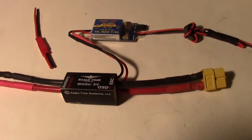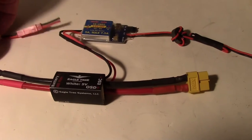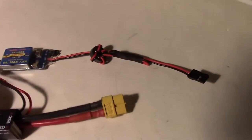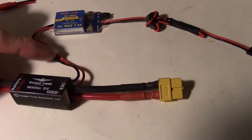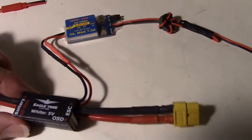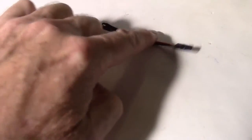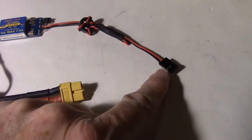After further thought I decided to just remove this set of JST plugs from between the UBEC and the power module. And just solder the wires directly together. So that's how I got it now. And then this will go to the servo bus on the Eagle Tree Vector.